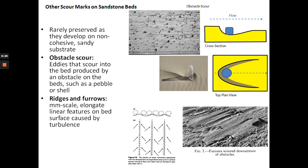These are scour marks on sandstone beds. They occur on sandstones and are rarely preserved because of the non-cohesive sandy substrate. In this case the scours are preserved on the top bedding plate. You get structures like obstacle scour, which looks like a flute in cross-section — it has a steeper edge and a tapering edge, and is caused by turbulence resulting in scouring of the sandy substrate.